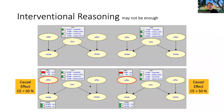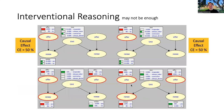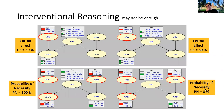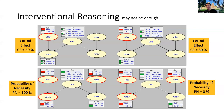The probability of necessity reveals the distinction: it is 100% for the first population (responders + contrarians only) and 0% for the second (always-takers + always-deniers only). Causal effect could not tell us these distinctions. Counterfactual queries could. This is significant — without this level of analysis, one can be seriously misled about what is causing outcomes and make decisions with unintended consequences.